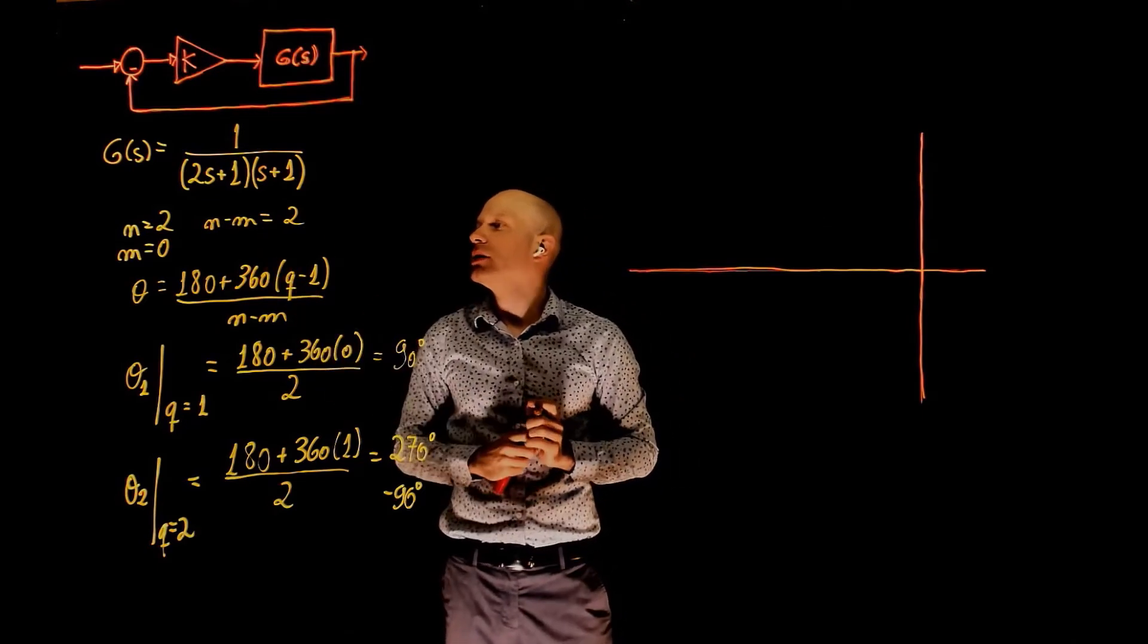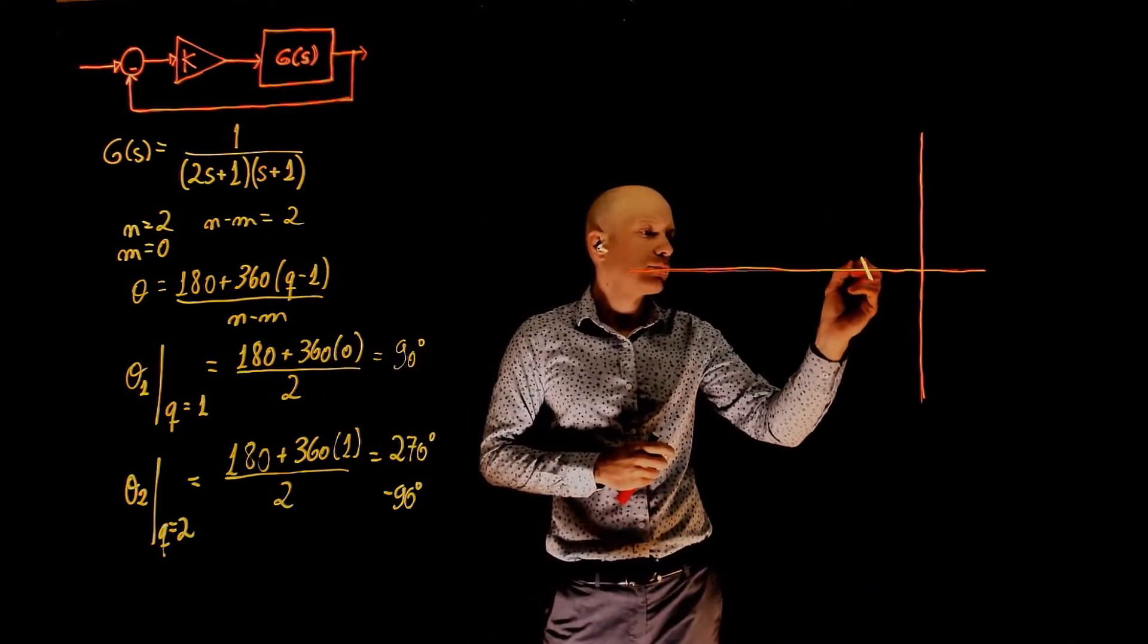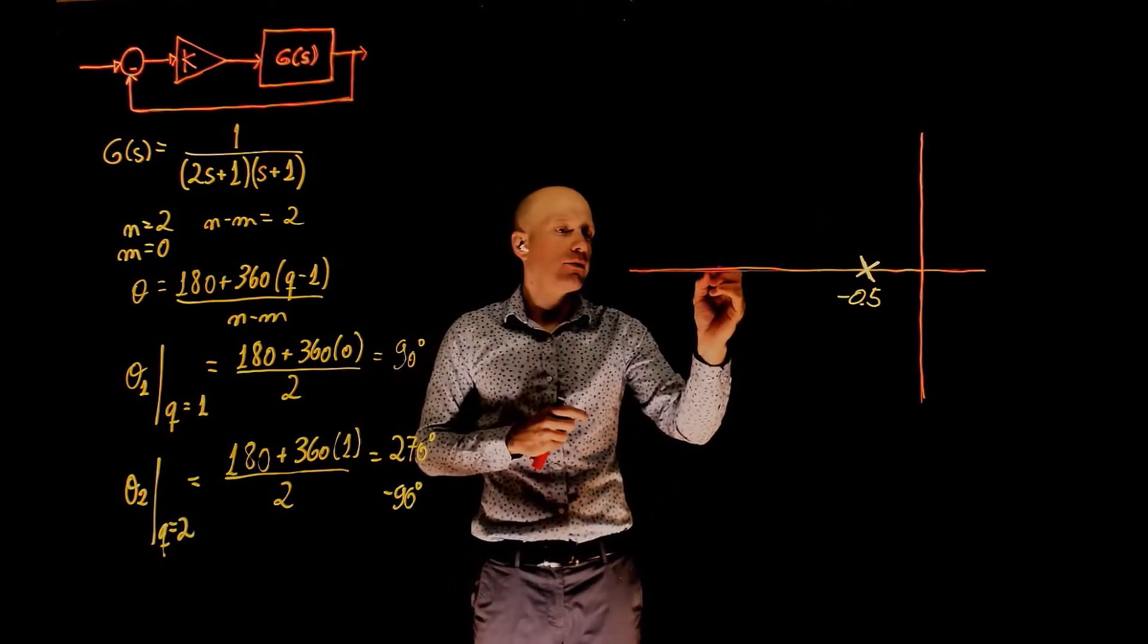We have a pole at negative 0.5 and we have a pole at negative 1.